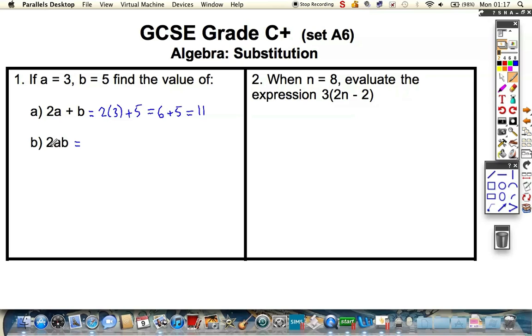Similar kind of process down here, except we've got 2 multiplied by a, multiplied by b. So, if you write this out, we've got 2 times 3 times 5, which you can do in any order. So, a fairly straightforward multiplication, 2 times 3 is 6, times 5 is 30. Easy enough.